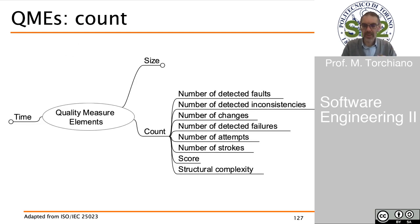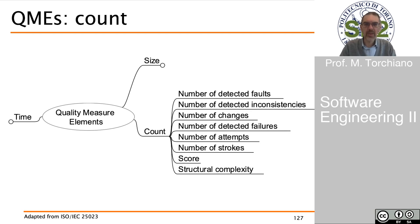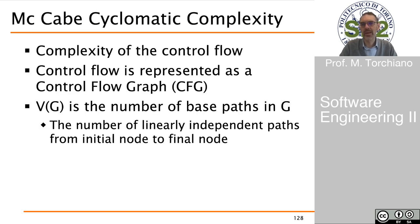The third category of base measures, typically called quality measure elements, are the counts, where we count items. We count faults, inconsistencies, attempts, strokes, and scores. A specific type of count is the so-called McCabe cyclomatic complexity, where we compute the complexity of the control flow.